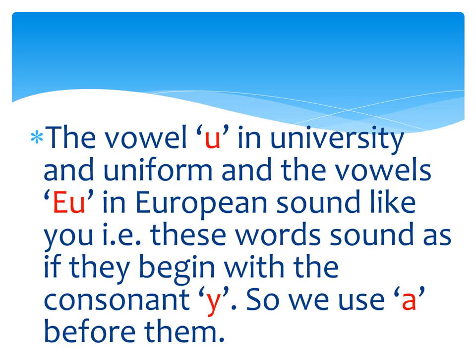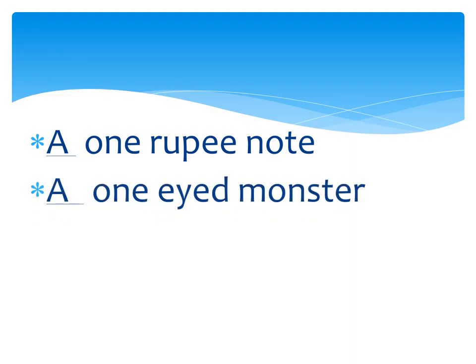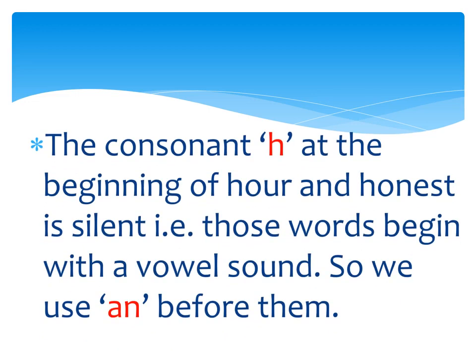Sound should be a vowel sound if you use An. For example, 'a one rupee note' and 'a one-eyed monster' — the word 'one' begins with O, a vowel, but sounds as if it begins with W, so we use A before it. The consonant H at the beginning of 'our' and 'honest' is silent, meaning those words begin with a vowel sound, so we use An before them — 'an hour,' 'an honest man.'